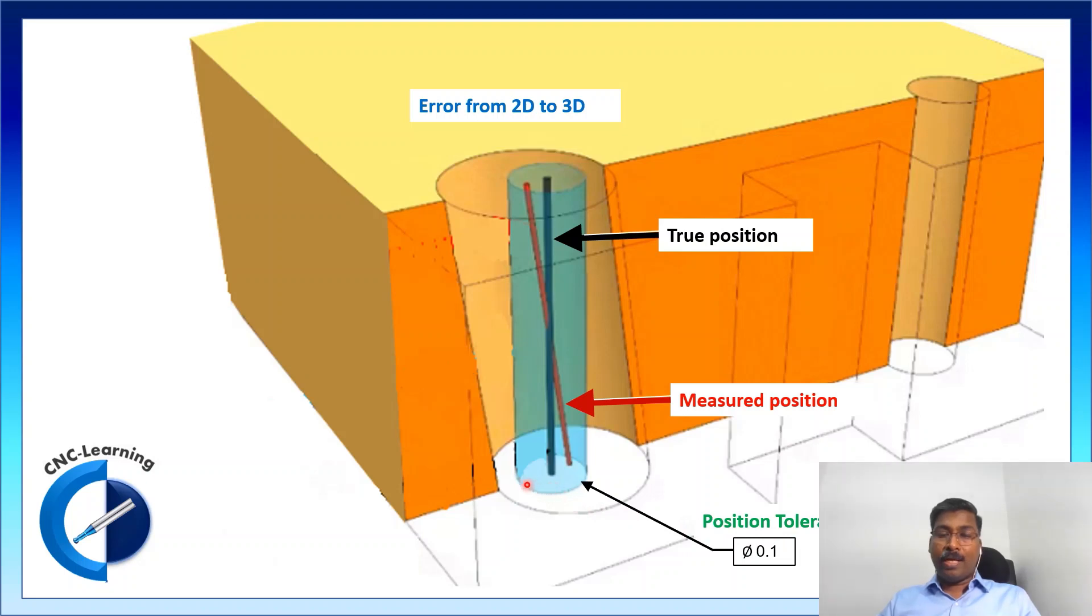So, any point which is lying within this cylindrical zone will be within tolerance.